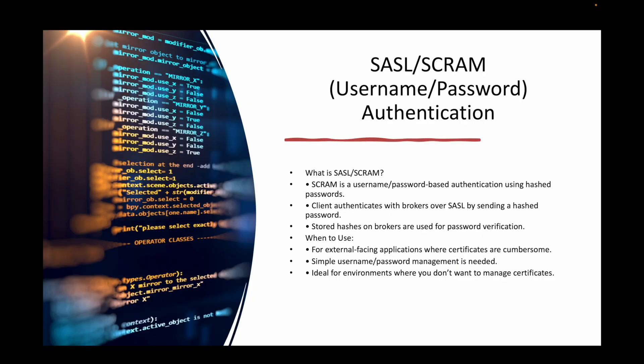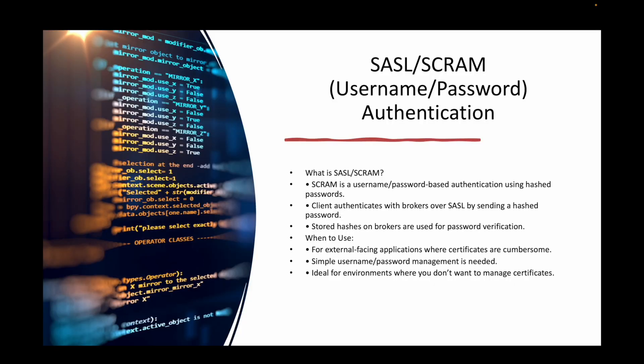The second one is username-password based authentication, also known as SASL/SCRAM authentication. How this works: you configure a username and password for the particular Kafka instance. When it comes to AWS, when you create the cluster you can enable SASL/SCRAM authentication, and then you use AWS Secrets Manager to create a username and password for your cluster.